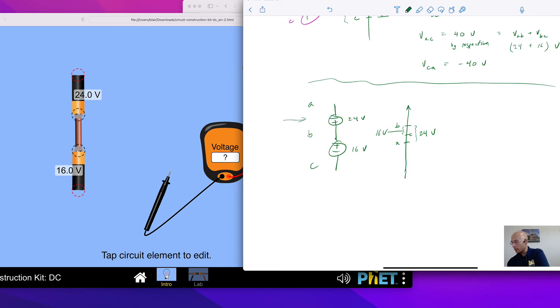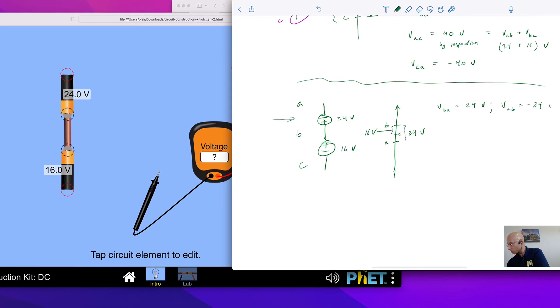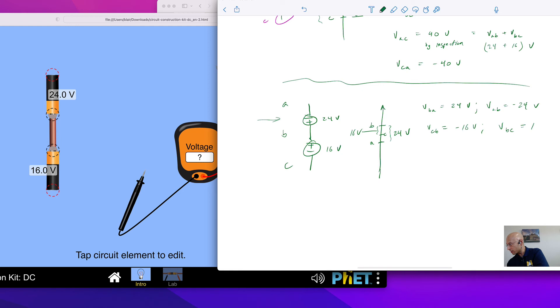Now, let's write some things down. So VBA is 24 volts, so that's B reference to A, or B relative to A, 24 volts. Then if we take A as the reference and B as the observation point, we have this. Then we take B as reference and C as the observation point, so VCB. And looking at the battery, C is 16 volts lower than B, so we'll put negative 16 volts. And then VBC is 16 volts.